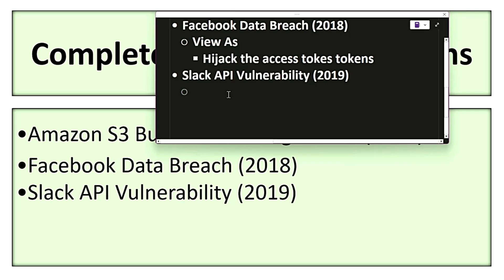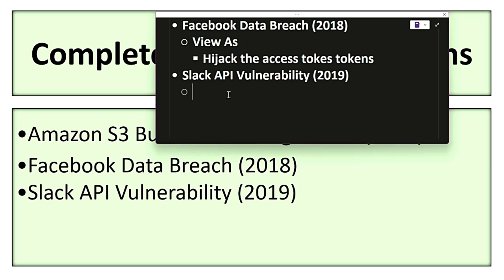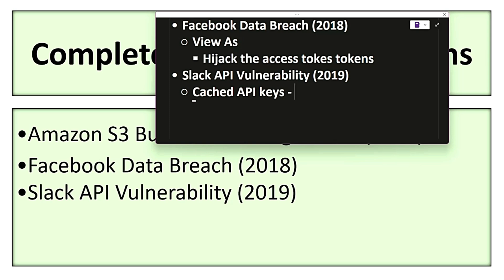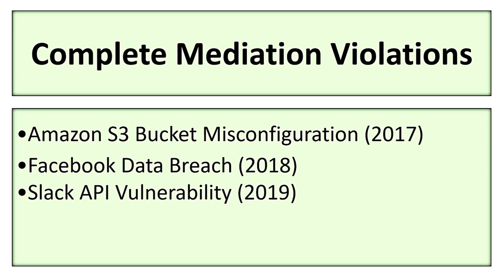The next example is the Slack API vulnerability in 2019. Even if a user's access to a channel was revoked, cached API keys still allowed access until the session expired. The system did not properly revalidate permissions during every API call, and this led to unauthorized access. These are some examples where complete mediation was not followed.